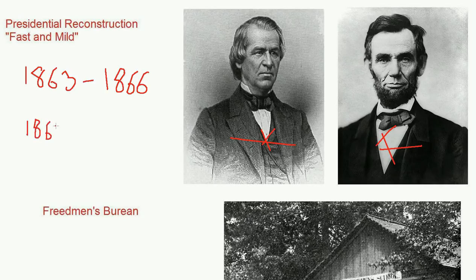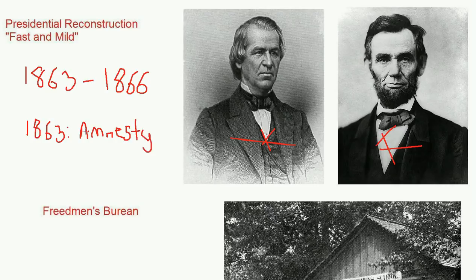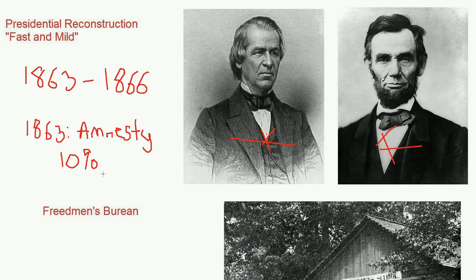Lincoln is the first person to come up with a plan to reintegrate the Southern states back into the Union. In December of 1863, Lincoln proposed what he called the Proclamation of Amnesty and Reconstruction — his Amnesty Plan. This plan involved a simple formula known as the 10% plan: only 10% of citizens of a state had to declare loyalty and swear a loyalty oath to the United States, agree to uphold policies including emancipation. If 10% agreed, they would receive an official pardon from the president and be allowed to vote and run for public office.